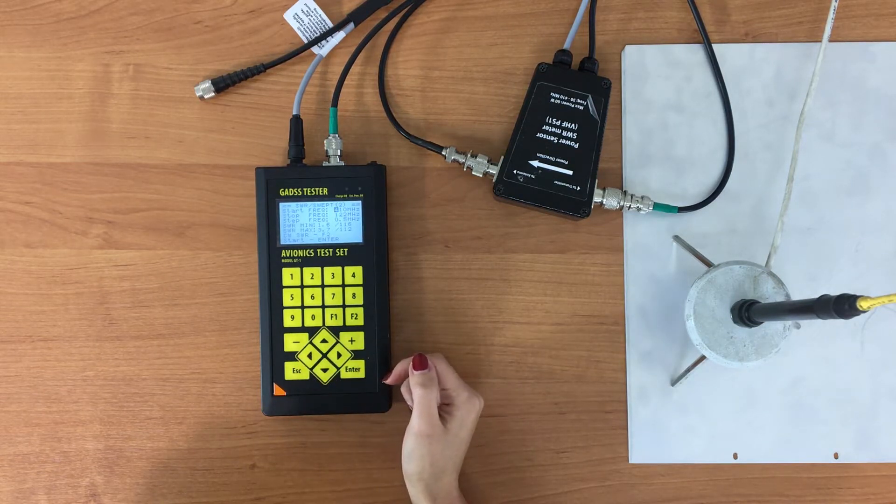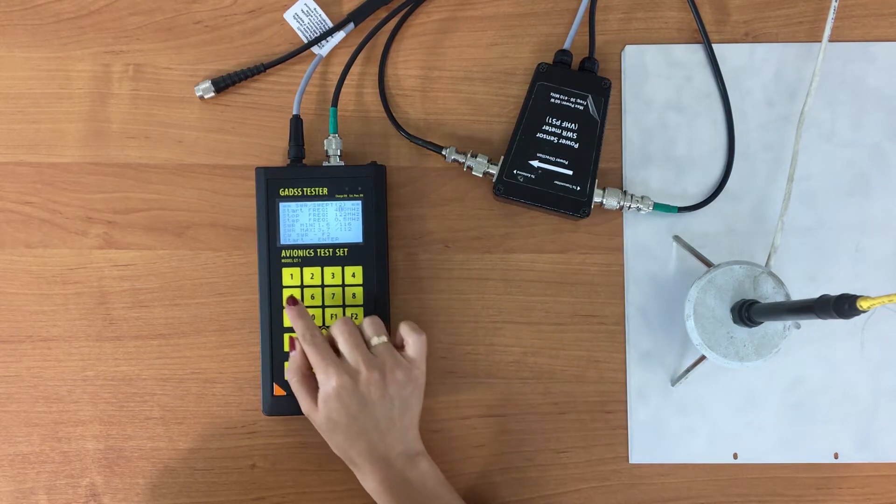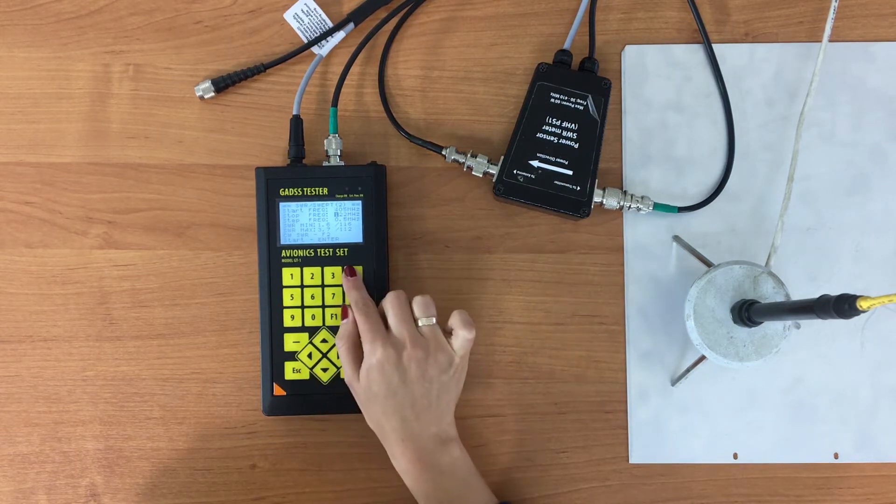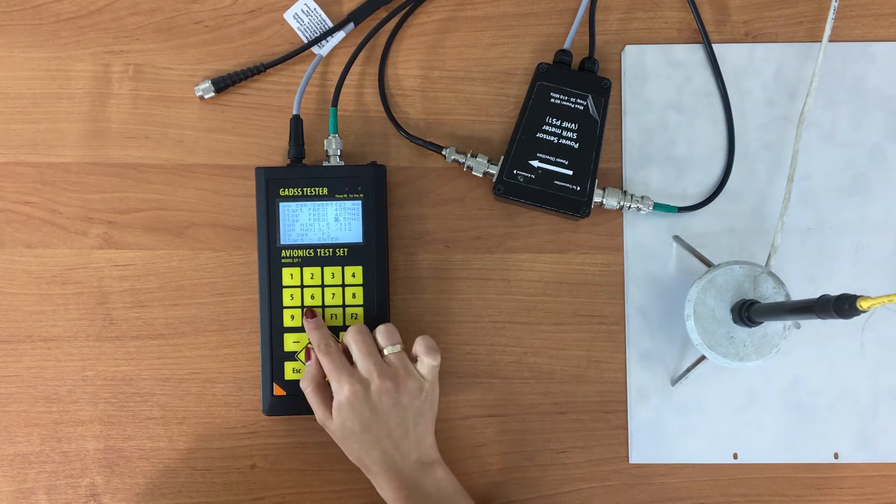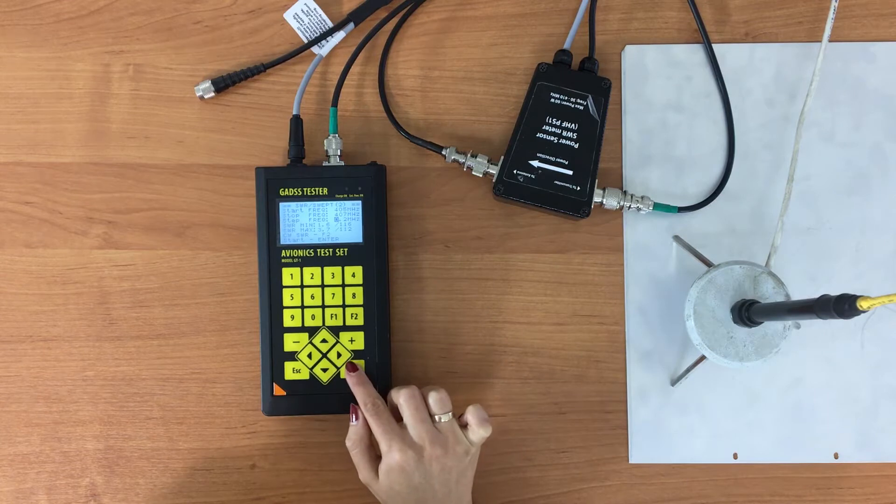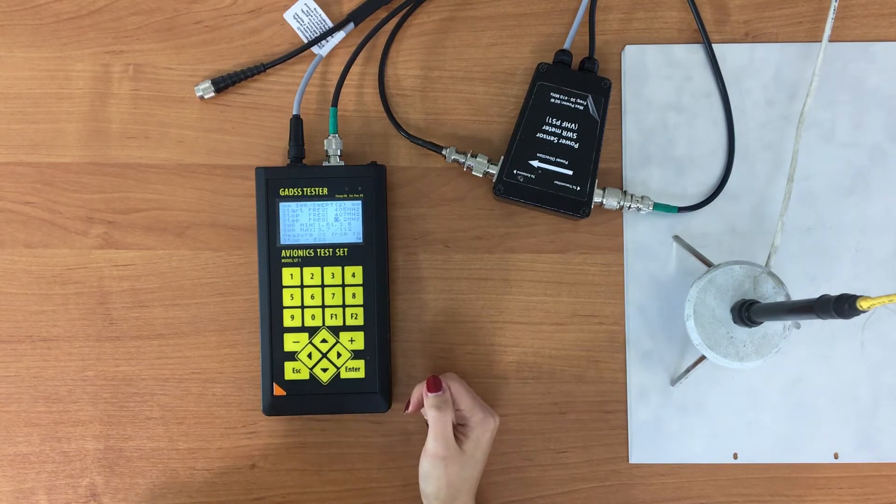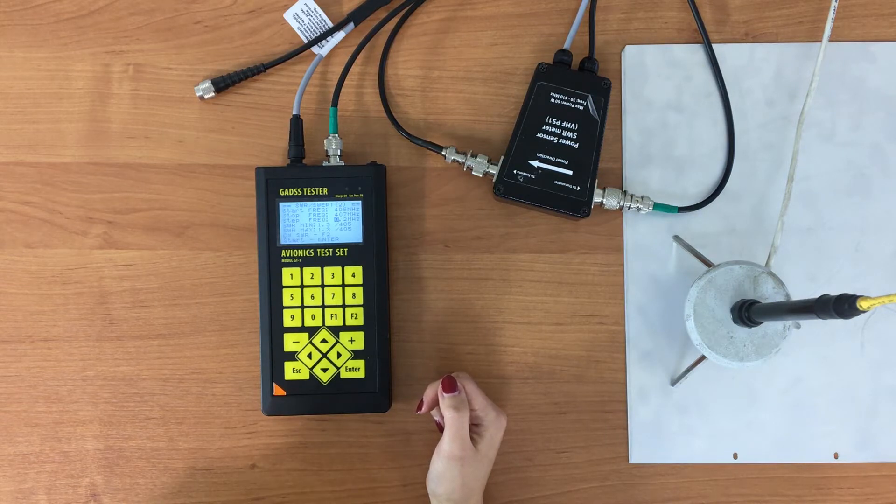Now set up the range from 405 to 407 MHz with the step 0.2 and press ENTER. The SWR range is also satisfactory.